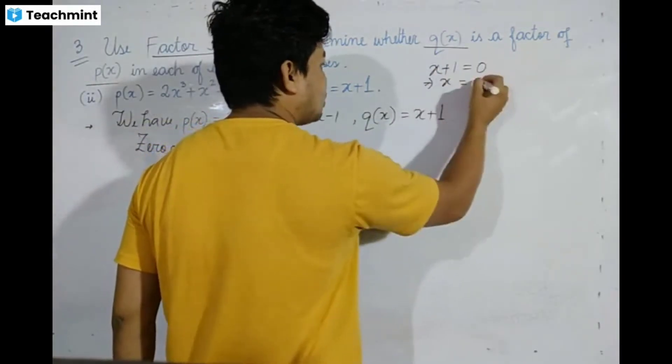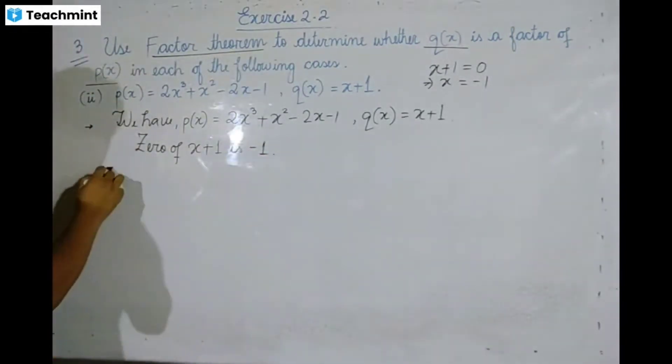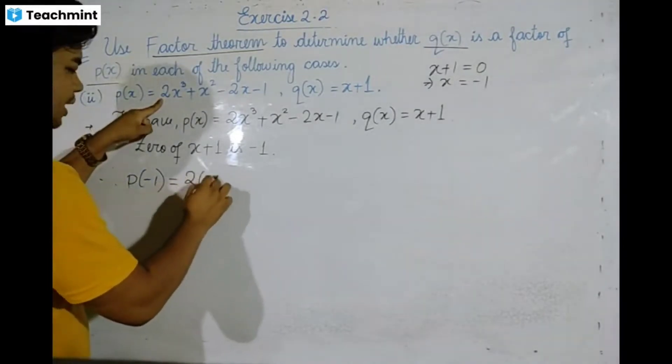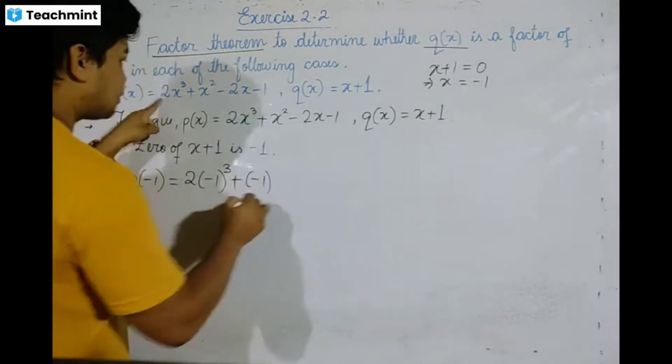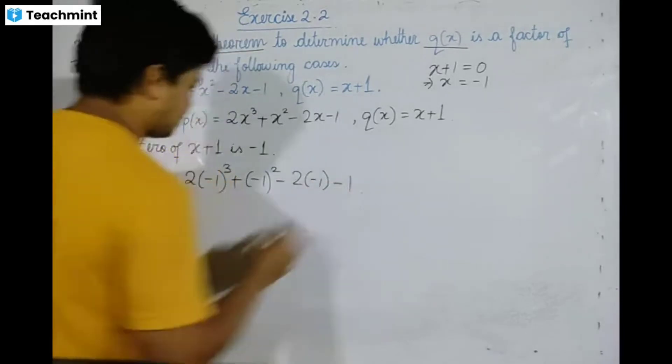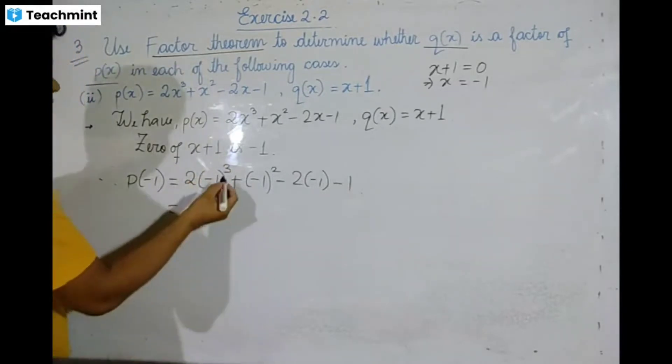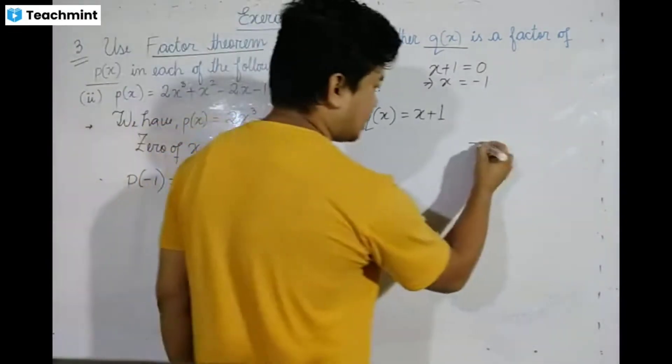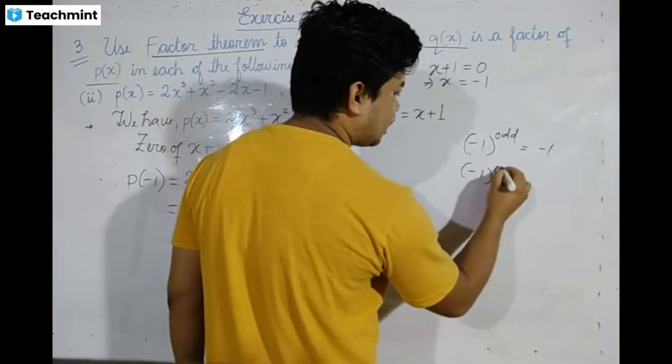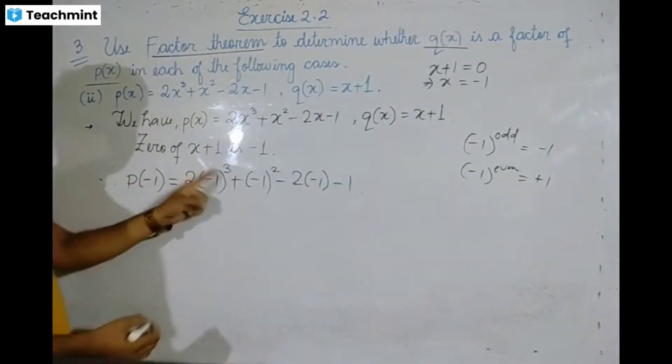Therefore, P(-1) equals 2(-1)³ + (-1)² - 2(-1) - 1. We have P(-1) equals 2(-1)³ + (-1)² - 2(-1) - 1.